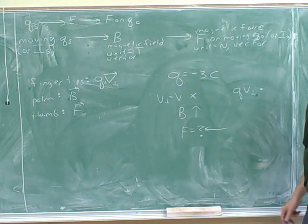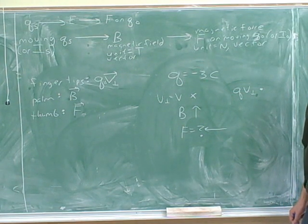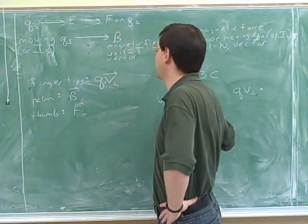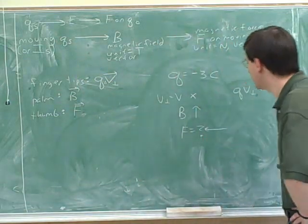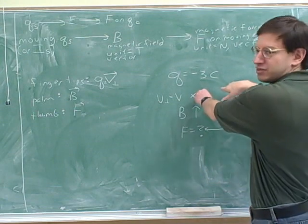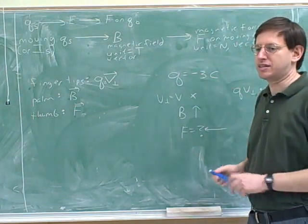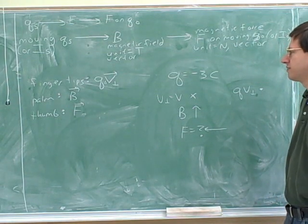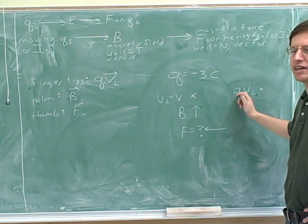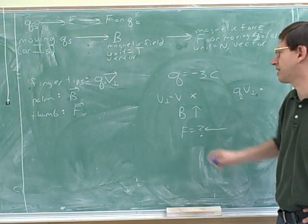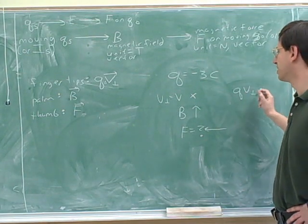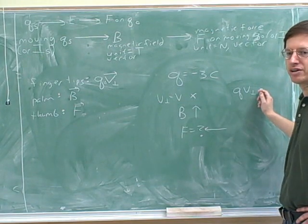We're treating this as a test charge, not a source charge — the clue is that we want the force on it. We're assuming there's an external magnetic field from some unspecified source. This is one people most likely get wrong because they're lazy and don't write down qv, then end up pointing their fingers into the page. Watch out for negative charges on the exam. If you always point your fingers in the direction of qv, that automatically handles negative charges — qv will be opposite to v for a negative charge.